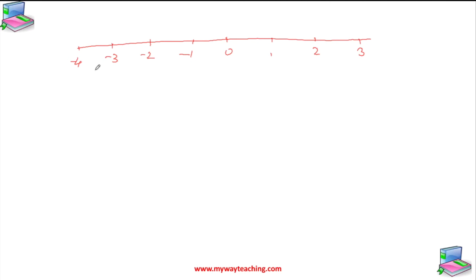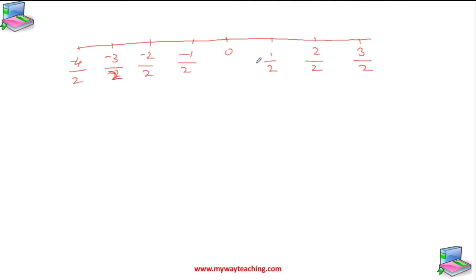If we are talking about rational numbers on the number line, we can have 1/2, 2/2, 3/2 on the positive side, and minus 1/2, minus 2/2, minus 3/2, minus 4/2 on the negative side. So these are rational numbers represented on a number line.